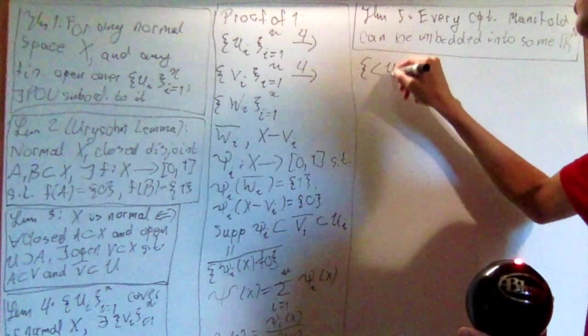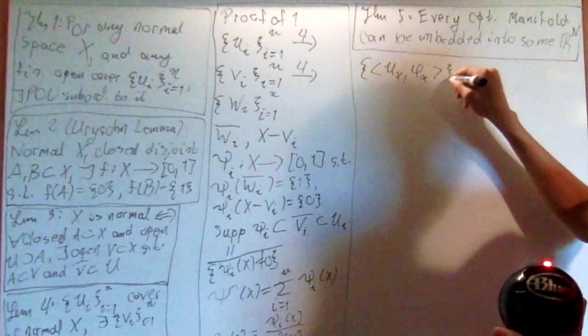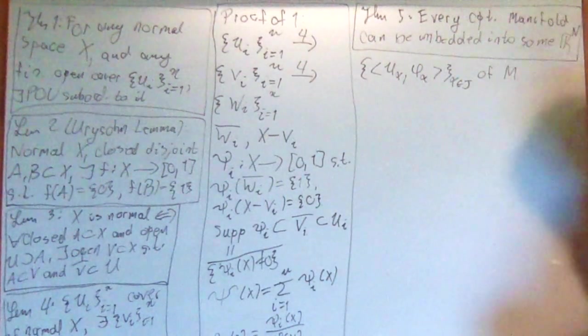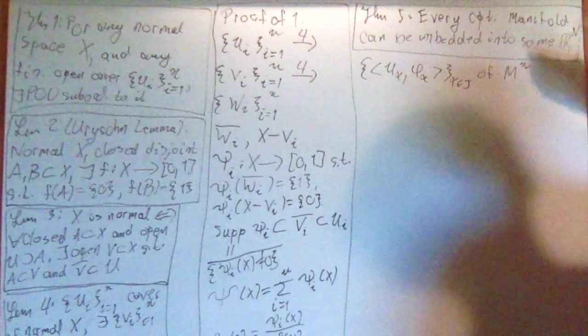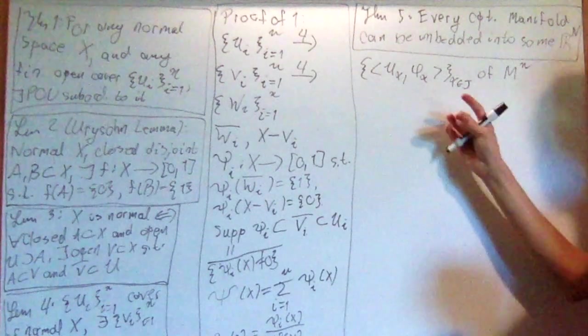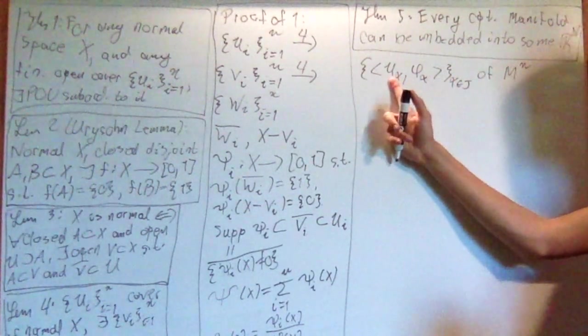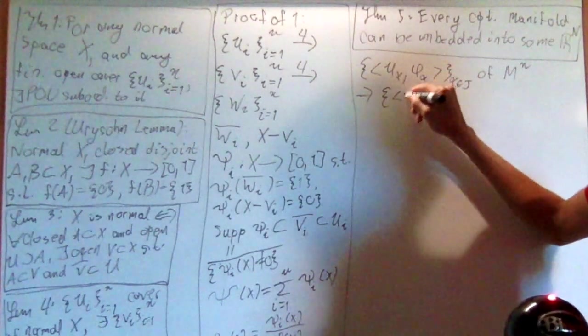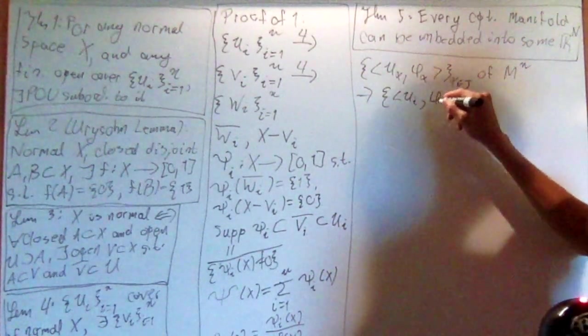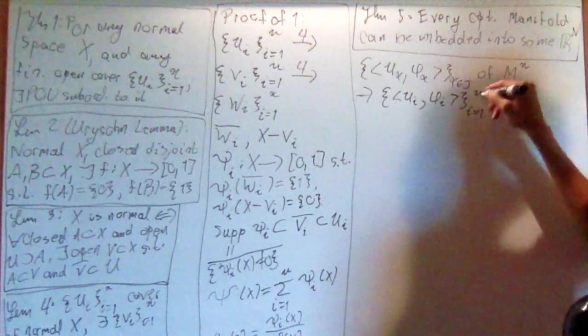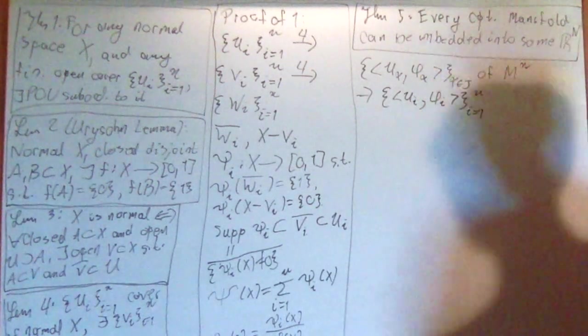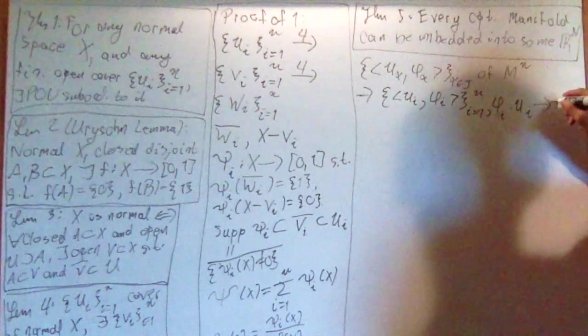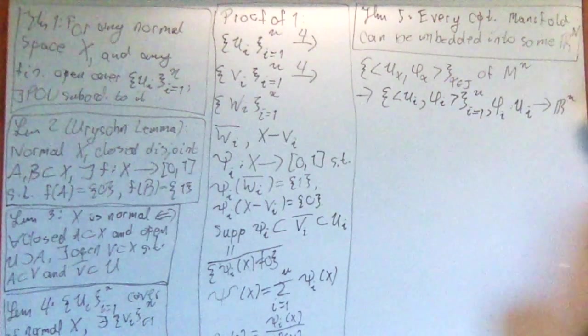So first of all, let's choose a bunch of charts, u alpha, phi alpha, for alpha in j, of your manifold m. I'll just give it a name now. And let's give it a dimension lowercase m. Now specifically, these must cover m. So these u alphas cover m. Well then, by the fact that m is compact, that means that we can reduce this to a chart, some charts u i, phi i, from i equals one to capital N. Every open cover has a finite sub cover. Remember that this is an embedding from phi i, from u i down to r lowercase m. So this is an embedding. Remember that.